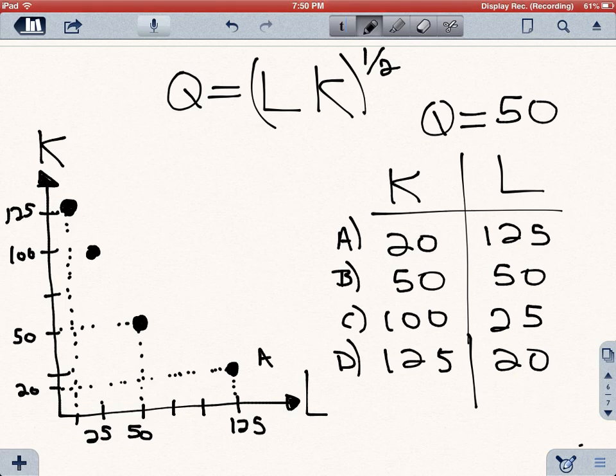And here's our point B, 50 and 50. Here's our point C, 100 capital and 25 labor. And here's our point D, which is 125 capital and 20 labor.